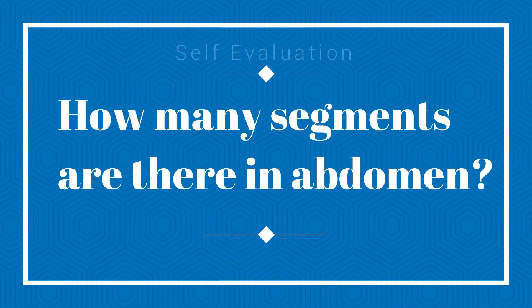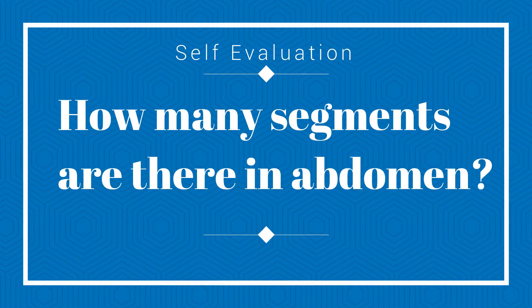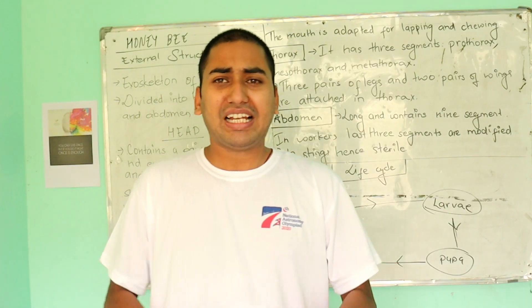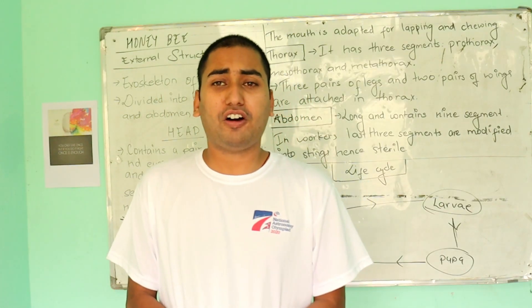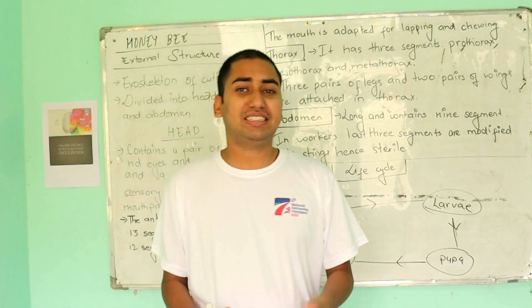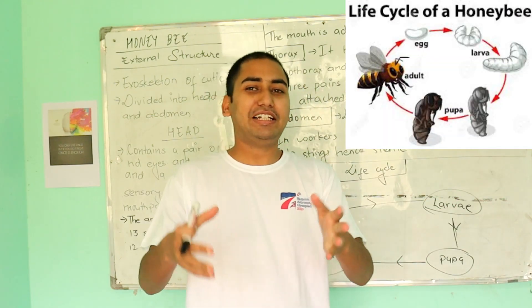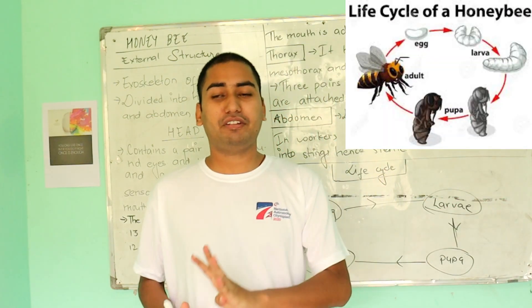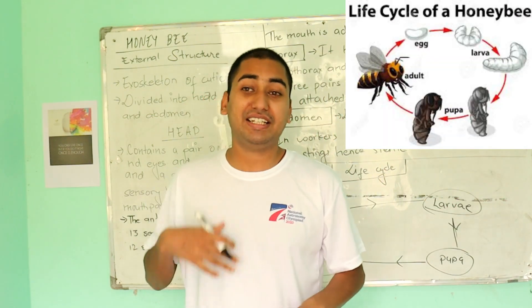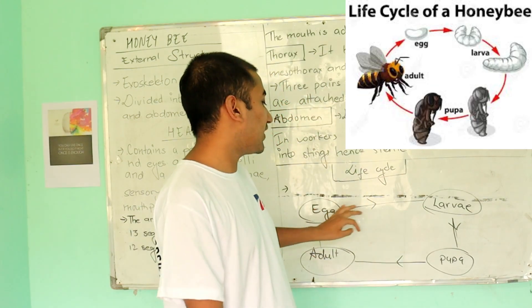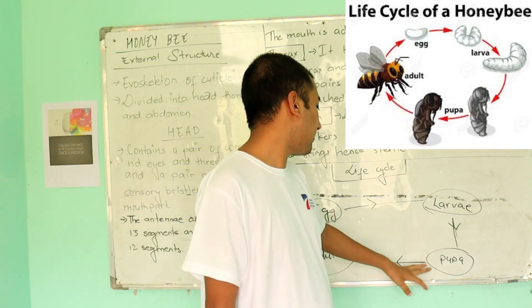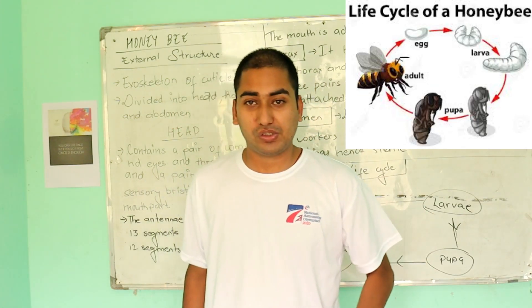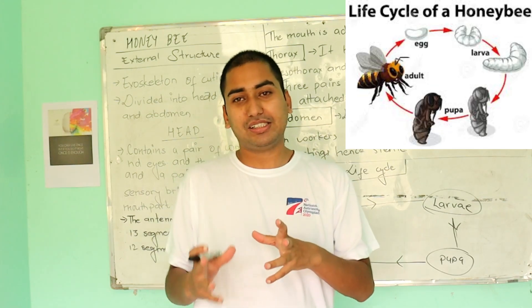What is the life cycle of the honeybee? There are 4 phases, like any other insect: egg, larva, pupa, and adult.